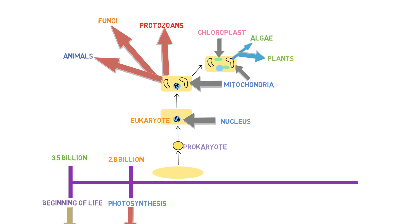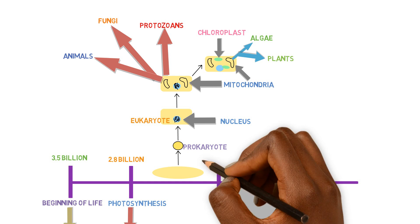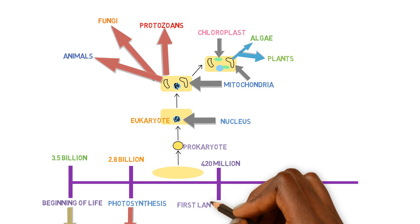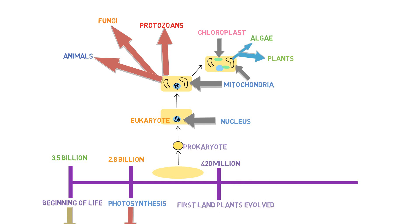The earliest plants resembled algae with algal characteristics. But as mutations began to occur in different environments, they began to lose those algal characteristics and develop features more suitable for land development. This happened around 420 million years ago when the first land plants began to evolve.